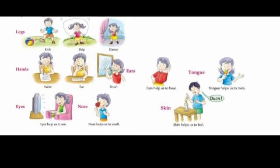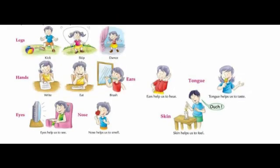Let us talk about external body parts and their functions. First, eyes — we see things with the help of our eyes. Ears — we hear things with the help of ears. Nose — we smell and breathe with the help of the nose. Mouth — it helps us in eating and drinking.